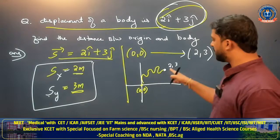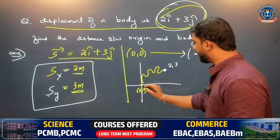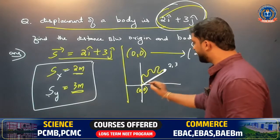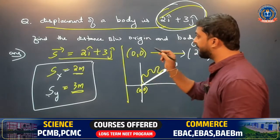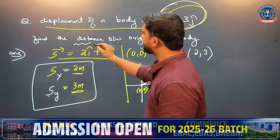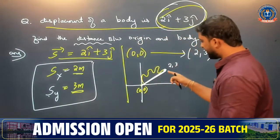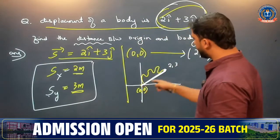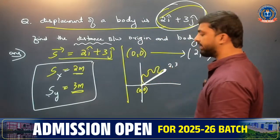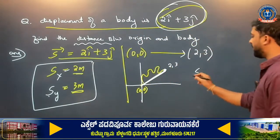What is the distance between the body and the origin? I am not asking the distance travelled — I am asking the distance between the origin and the final position. So let us look at the formula.